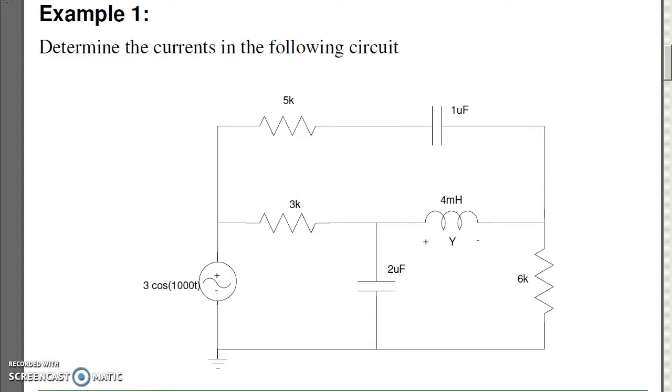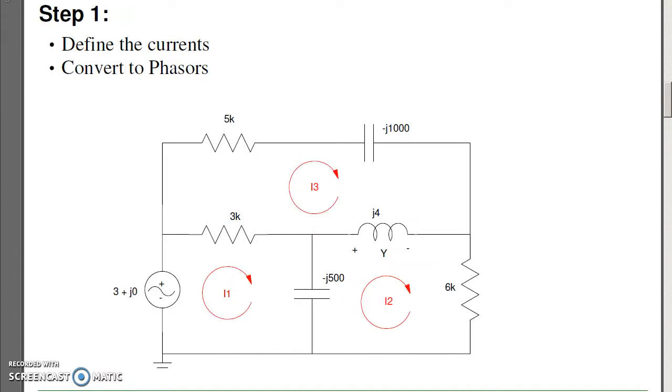For example, suppose you want to find the currents in the following circuit. The first step, just like we did at DC, is to find the current loops, and one additional step - I have to convert these to phasor impedances. The impedance of the cosine is 3 plus j0. The capacitor becomes 1 over jωC, the inductor becomes jωL, and resistors stay the same.